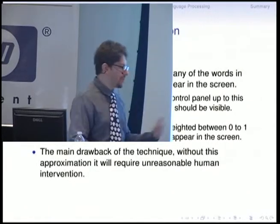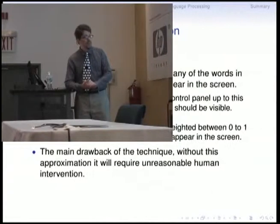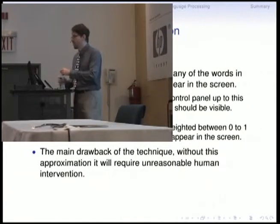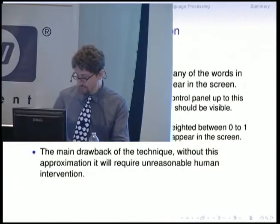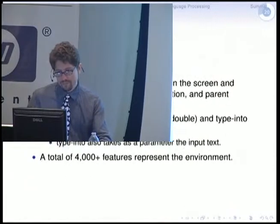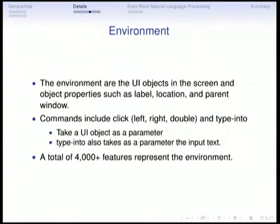The same applies if you are trying to find the best parameters for the Debian installer — you would need to do that without any human intervention. The environment for them consists of all the UI objects on the screen and properties such as label, location, and parent window. They have commands like click, type into, and similar. In total, each environment encompasses 4,000 features, which is quite a large number.